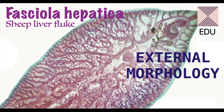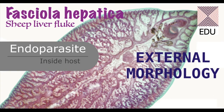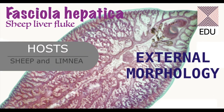Fasciola Hepatica has a very flat leaf-like body. It is an endoparasite because it is present inside the body of the host. It completes its life cycle in two hosts. The primary host is the sheep — a single sheep can harbor around 200 flukes. The second or intermediate host is Limnea, a snail found in ponds.